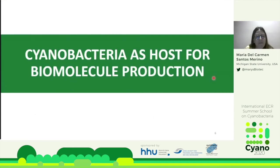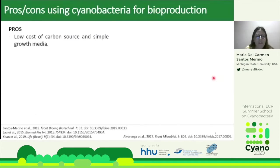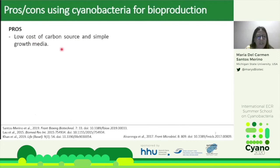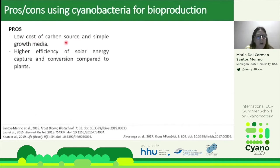In this presentation, we are focusing on cyanobacteria as hosts and will describe the advantages and disadvantages of using these microorganisms for bioproduction. Cyanobacteria offer advantages compared with heterotrophic organisms like E. coli because the media they use is very simple and the carbon source is very cheap. Compared with plants, cyanobacteria show higher efficiency of solar energy capture and conversion, and they don't compete with arable land or potable water supplies.